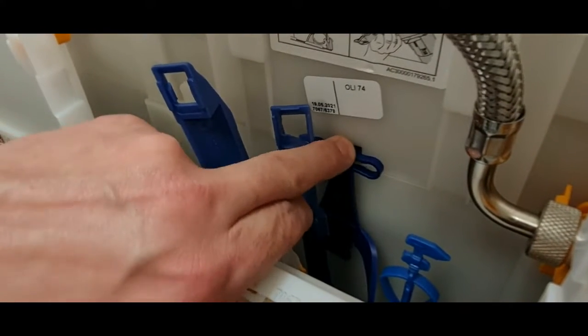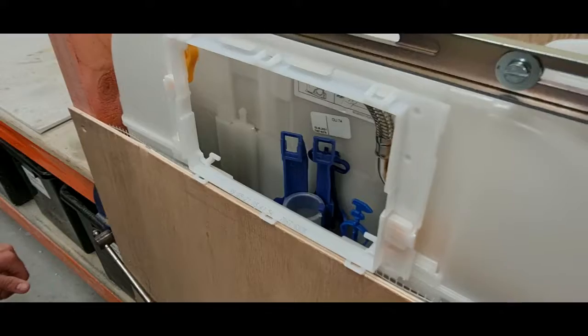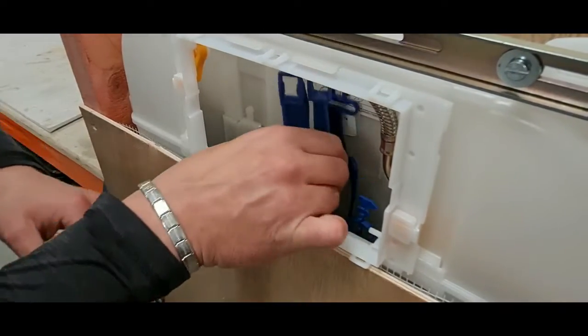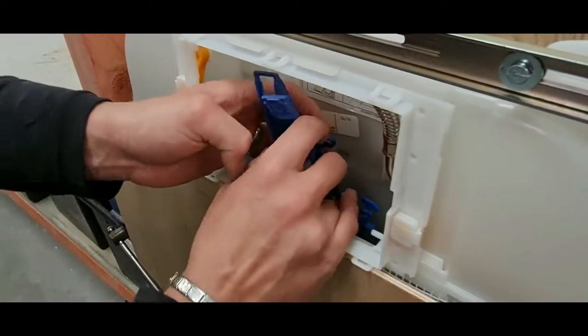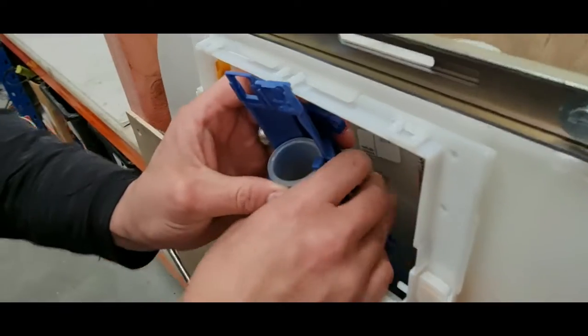Next, release the flush valve retaining clip as shown. These components are made of plastic and designed to be relatively flexible to aid in the removing, but please be careful when carrying this process out.